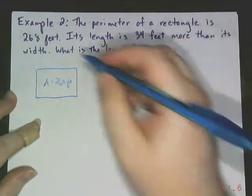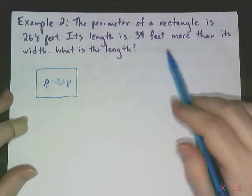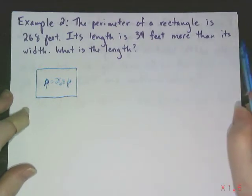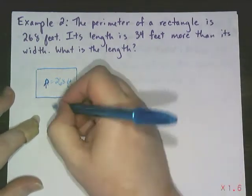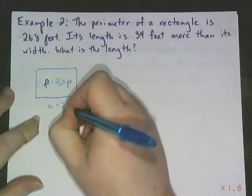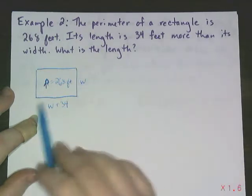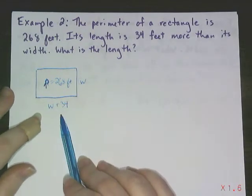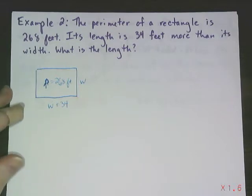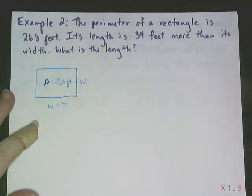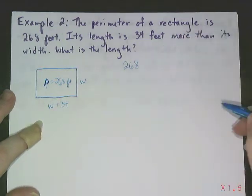Ooh, I should say, sorry, perimeter is 268 feet. And its length is 34 feet more than its width. So I like to call this side the length. So it's 34 feet longer than the width. That makes sense. If this is the width, this length is 34 feet longer than the width. So now let's write an equation to represent what exactly we're doing here.